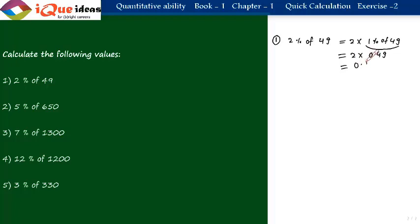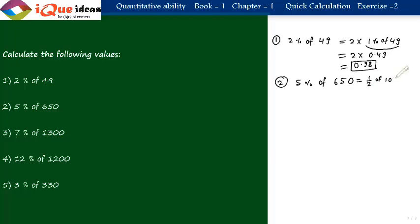Question 2: 5 percent of 650. We write it as half of 10 percent of 650. 10 percent of 650 is 65. So 5 percent is half of 65, and 65 divided by 2 is 32.5. That is how it becomes an easy calculation. Each question uses a different method to cover most approaches.